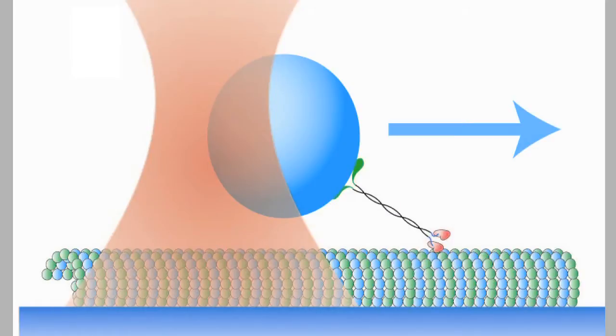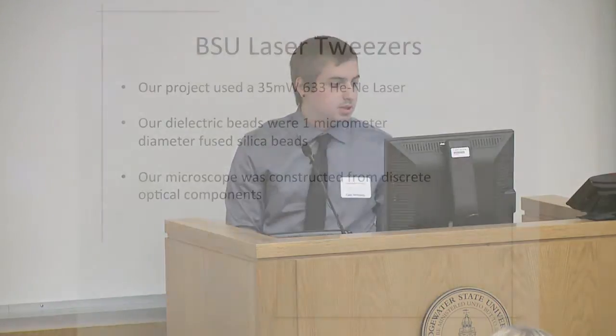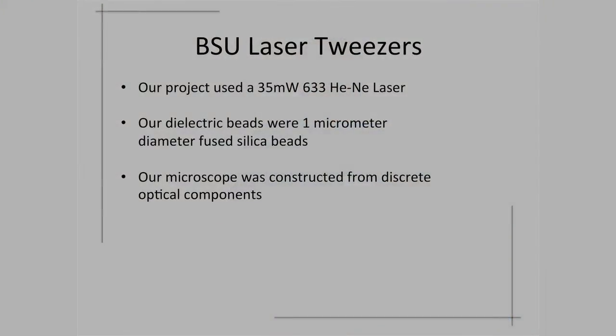In this image here I have an example of one of the ways an optical trap is used in biology research. So for our project we used a 35 milliwatt helium neon laser. Our beads were one micrometer diameter fused silica beads, and instead of buying a microscope like some other papers suggest we built ours out of components.